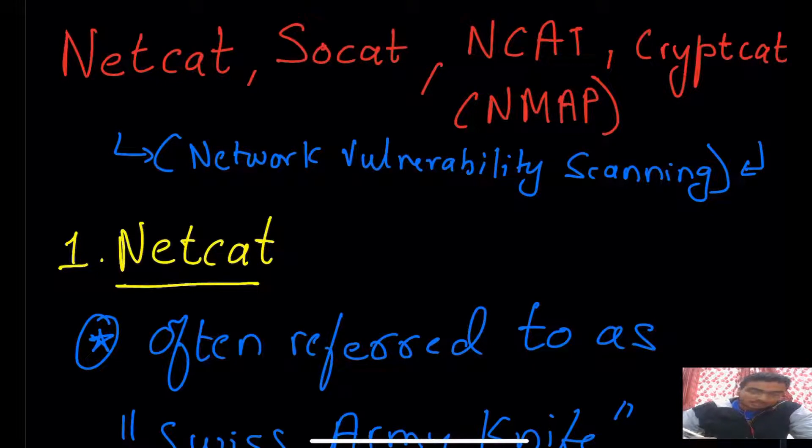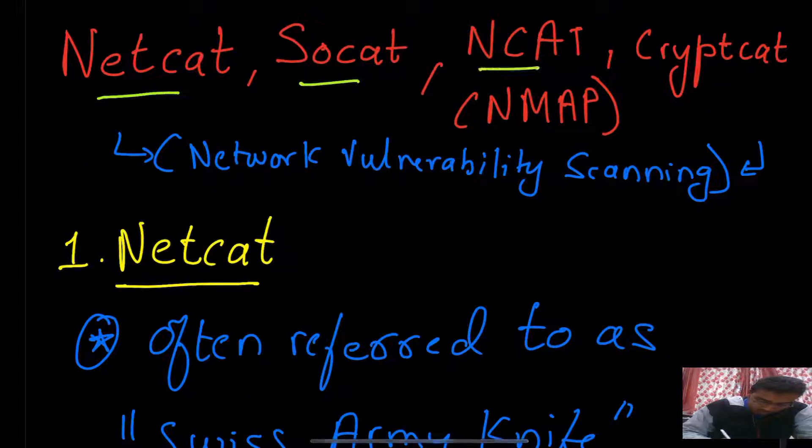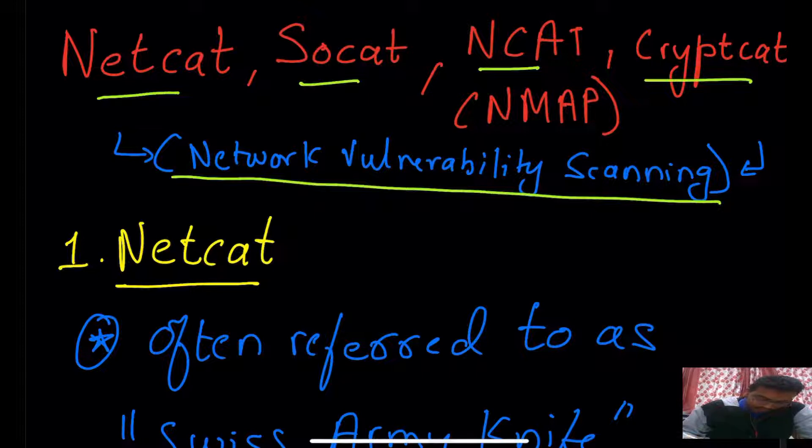Hello everyone, moving forward with the network security series. The topics we are going to cover now are netcat, socat, ncat and cryptcat. These are basically network vulnerability scanning tools. Let us see what they are one by one.